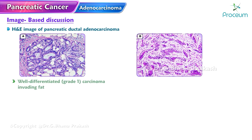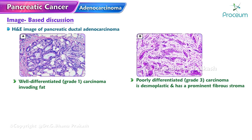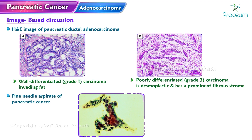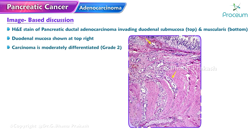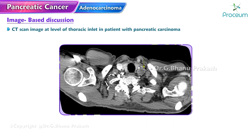Histology images show: Image A — a well-differentiated (grade 1) carcinoma invading fat; Image B — a poorly differentiated (grade 3) carcinoma that is desmoplastic with a prominent fibrous stroma (hematoxylin and eosin stain). A fine needle aspirate of pancreatic cancer shows a cluster of malignant cells. An image of pancreatic ductal adenocarcinoma invading the duodenal submucosa and muscularis is shown, moderately differentiated on H&E. A CT scan at the level of the thoracic inlet demonstrates a left supraclavicular lymph node — Virchow's node — in a patient with pancreatic carcinoma.